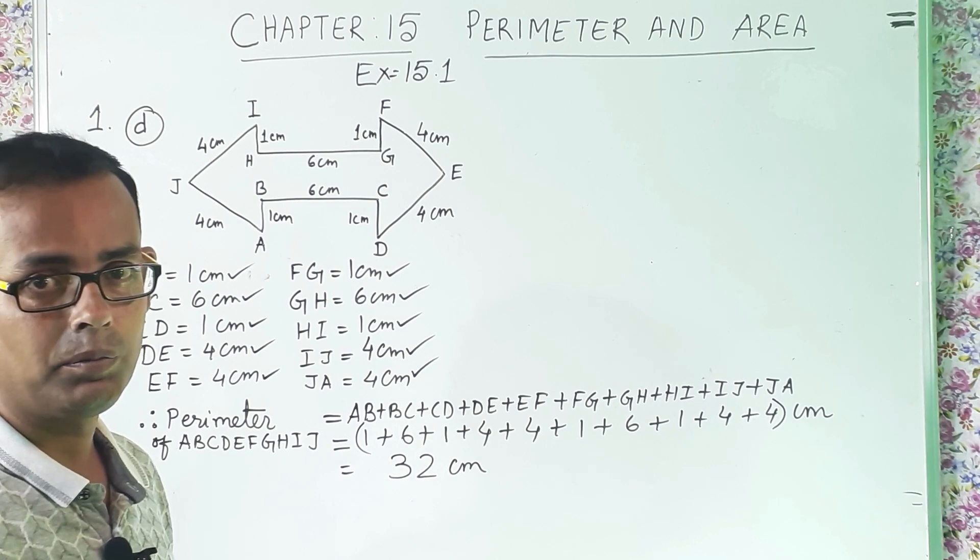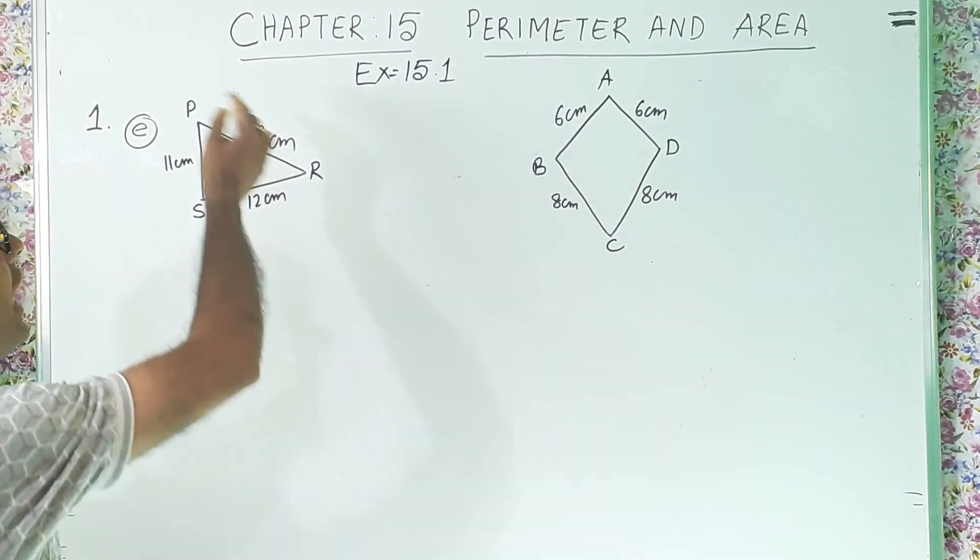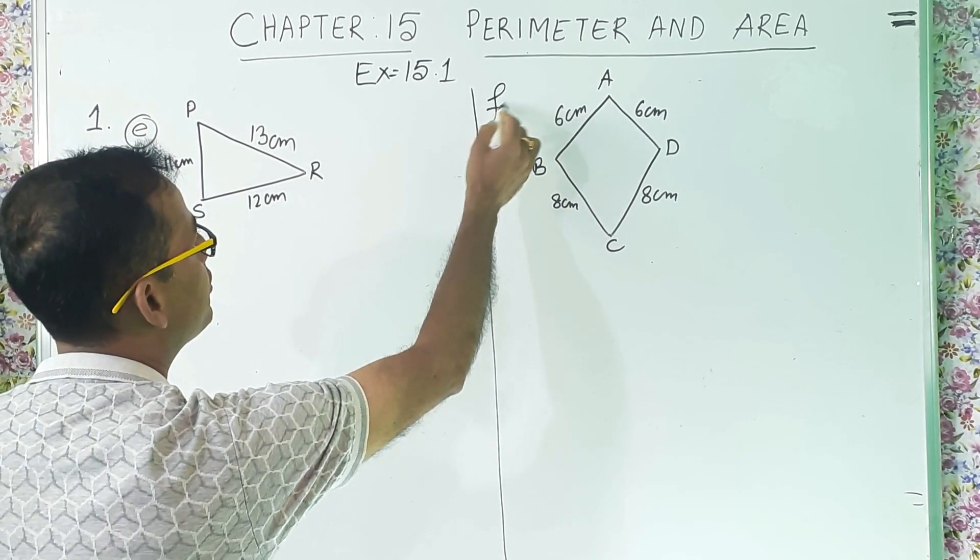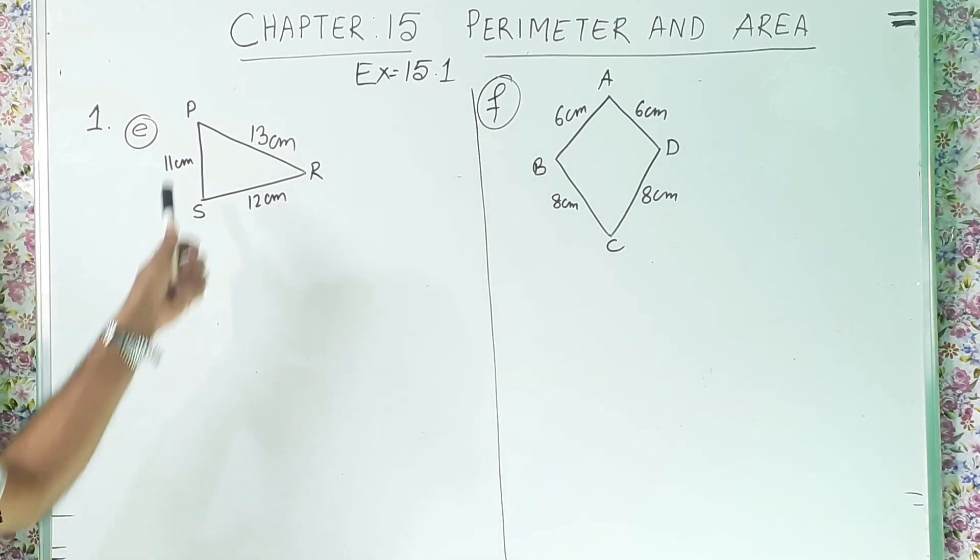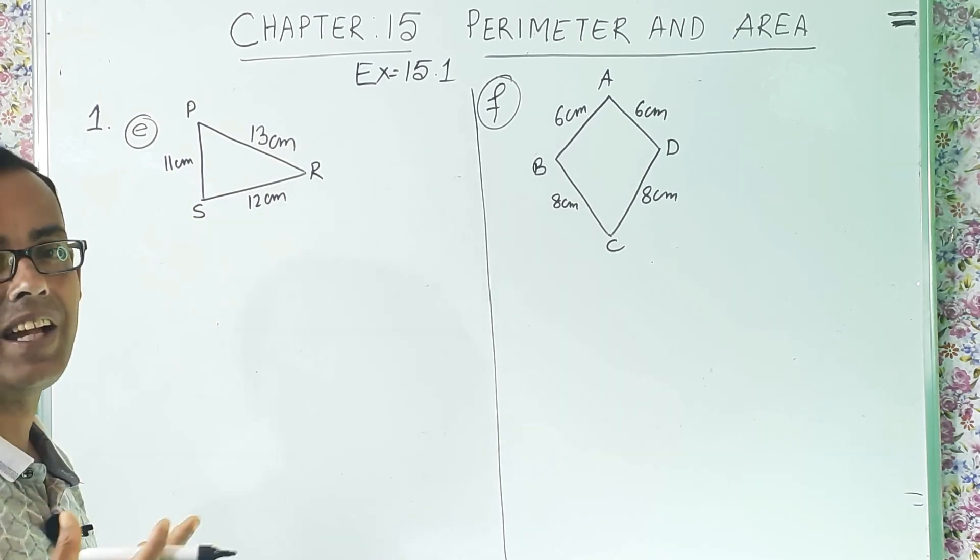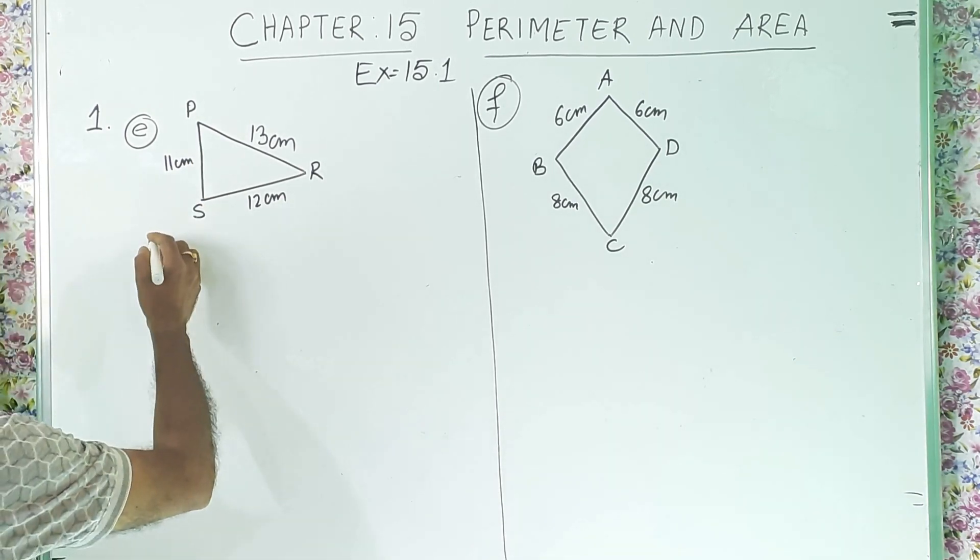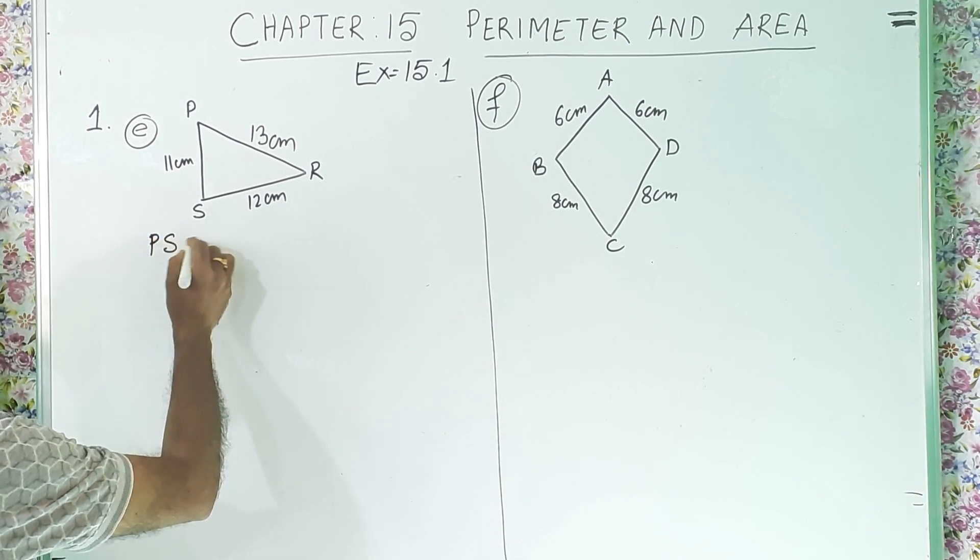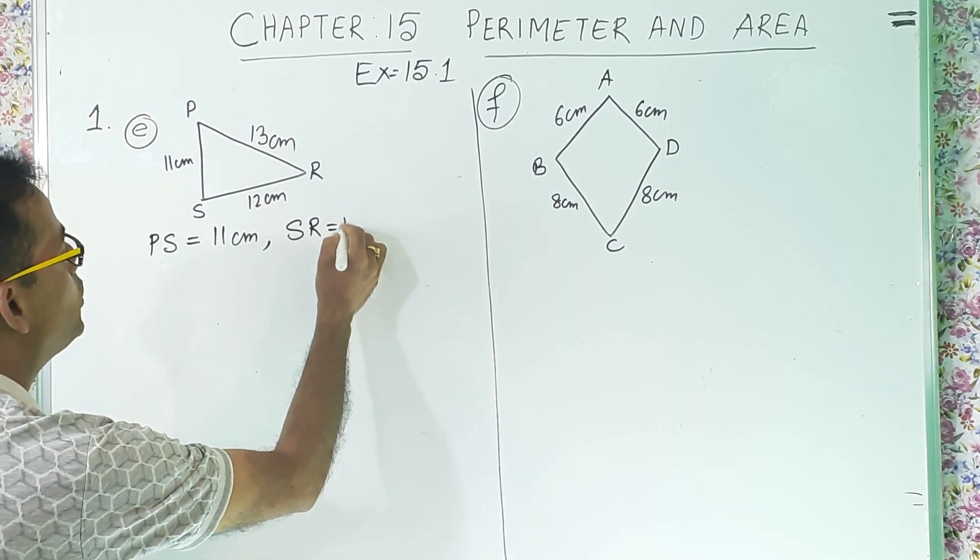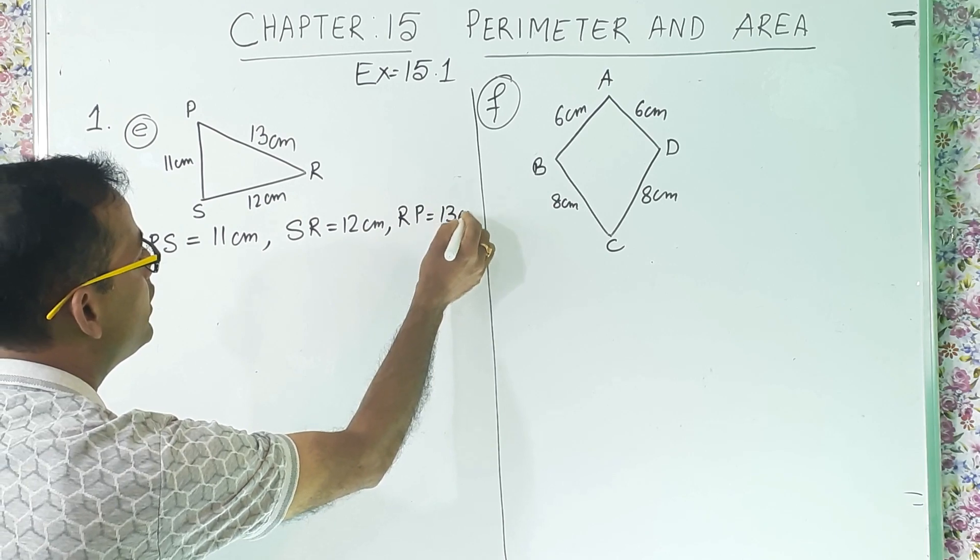Now, we will move to the next sum. Now, in question number 1E, let us see. This is the diagram. If I divide it, we will do here question number 1E and here F. Now, in 1E, you can see a triangle. And all the 3 sides are different. So, if in a triangle, 3 sides are different, what it is known as? It is a scalene triangle. So, let us write the information first. PS equal to 11 centimeter, SR equal to 12 centimeter and then RP equal to 13 centimeter.